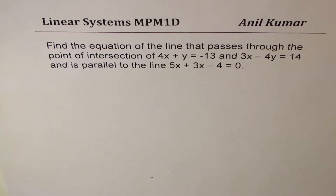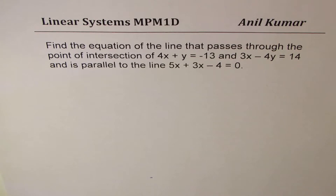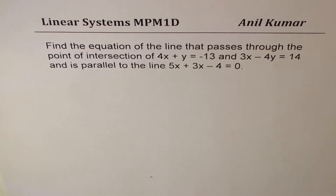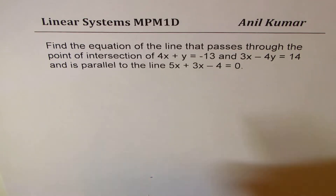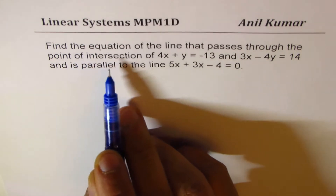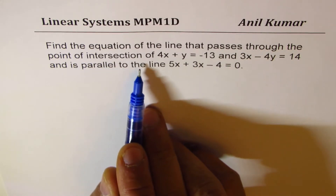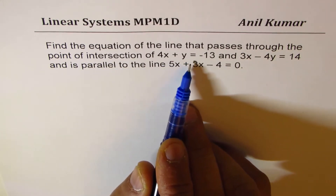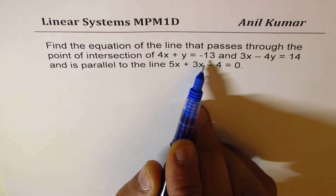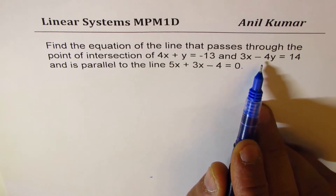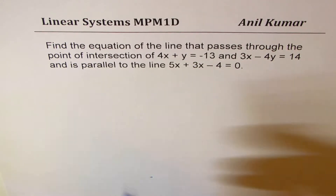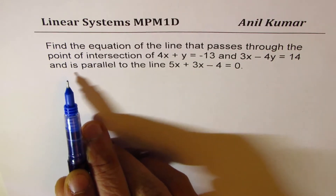I'm Anil Kumar. Let me first thank my subscribers for sharing an excellent question, and I hope its solution will help many of my viewers. The equation here is: find the equation of the line that passes through the point of intersection of 4x + y = -13 and 3x - y = 14, and is parallel